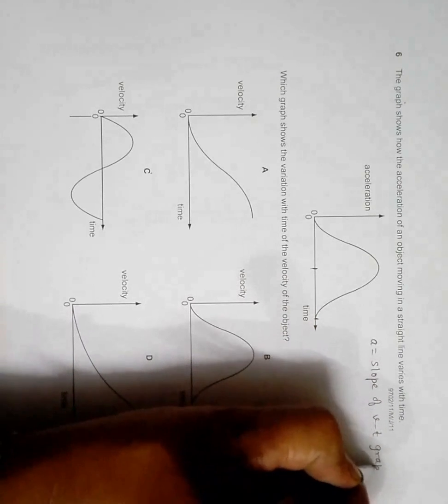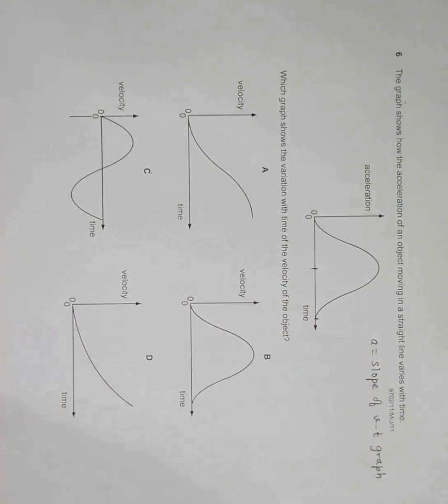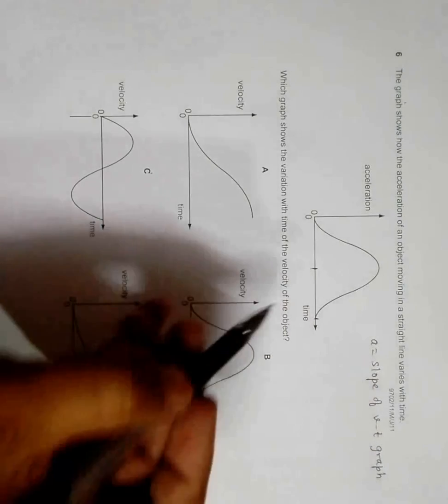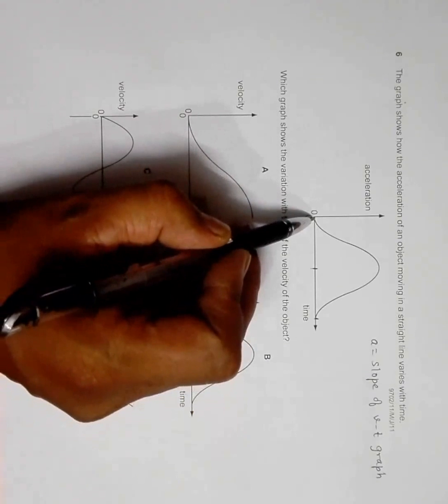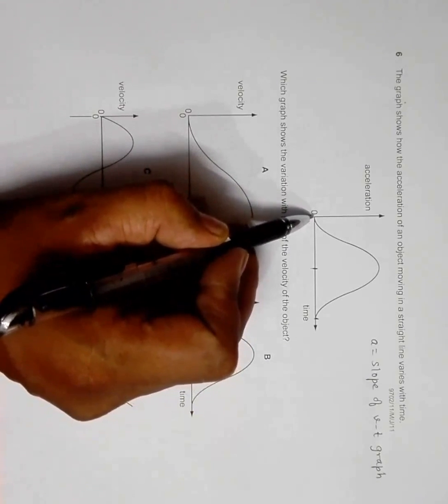The first thing to remember is a equals slope of VT graph. Here initially the value of a equals zero, which means that initially the slope of VT graph should be zero.